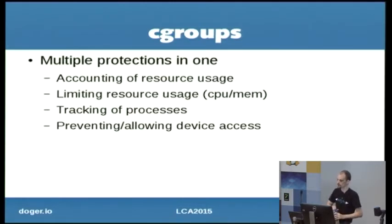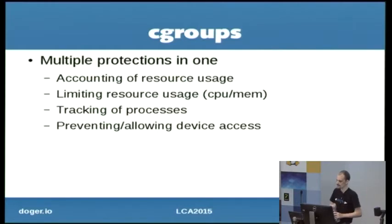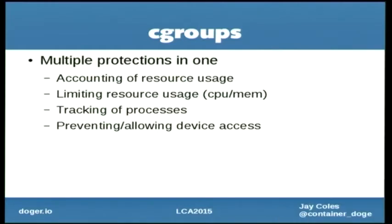One of C-groups' lesser-known features is it can actually block device access or give much more fine-grained access to devices, which is great if you need to grant access to a real physical hardware device dynamically. With MakeNode and capabilities, you might think that's enough, but if customers bring their own filesystem images and a device node is already on the filesystem, it's very easy for them to just put a device node for the root filesystem and access it that way. So you're really going to want to layer up and also use C-groups to restrict access to devices.